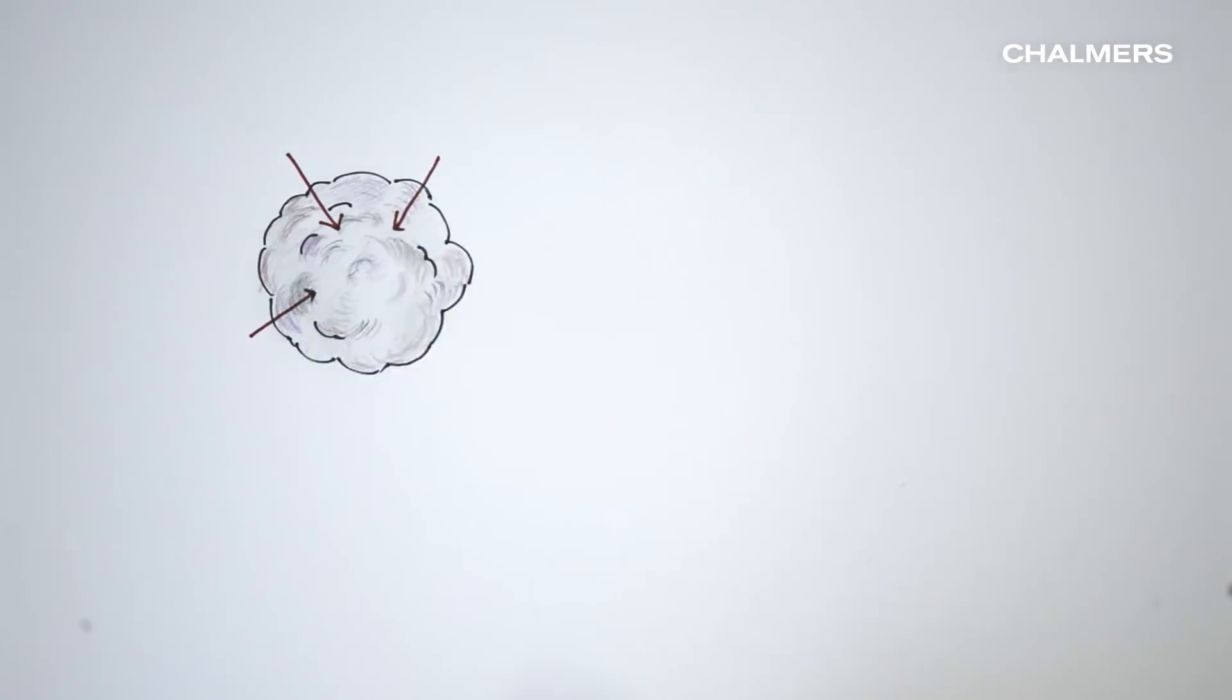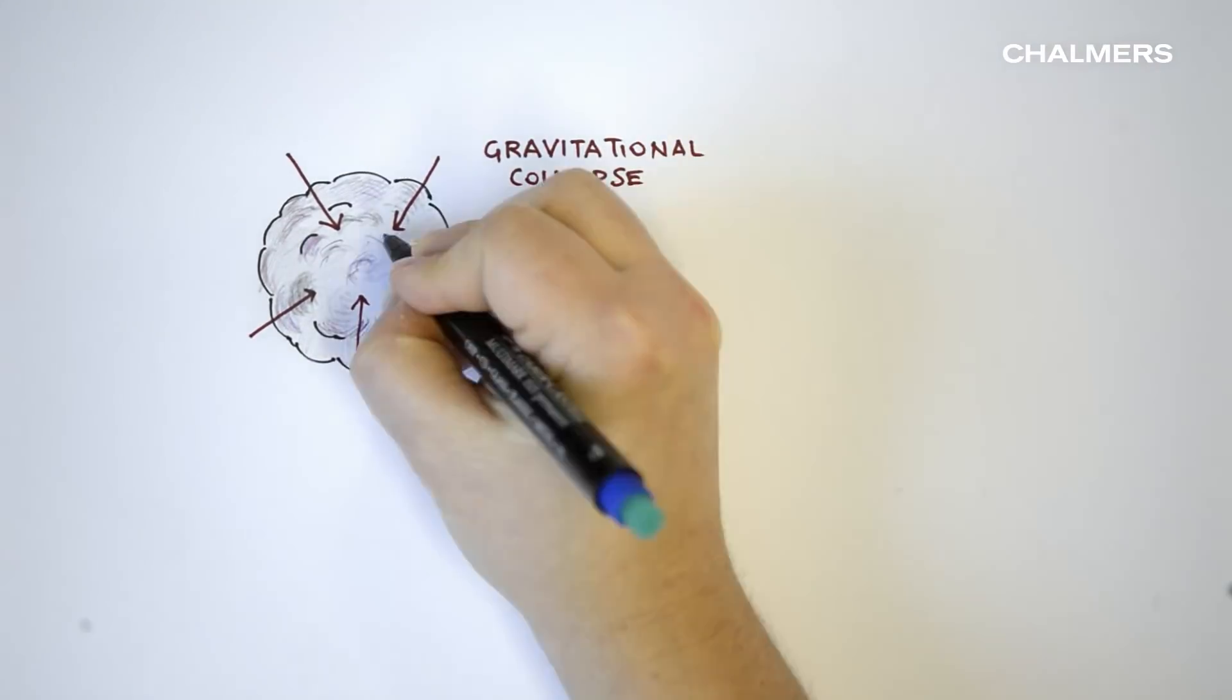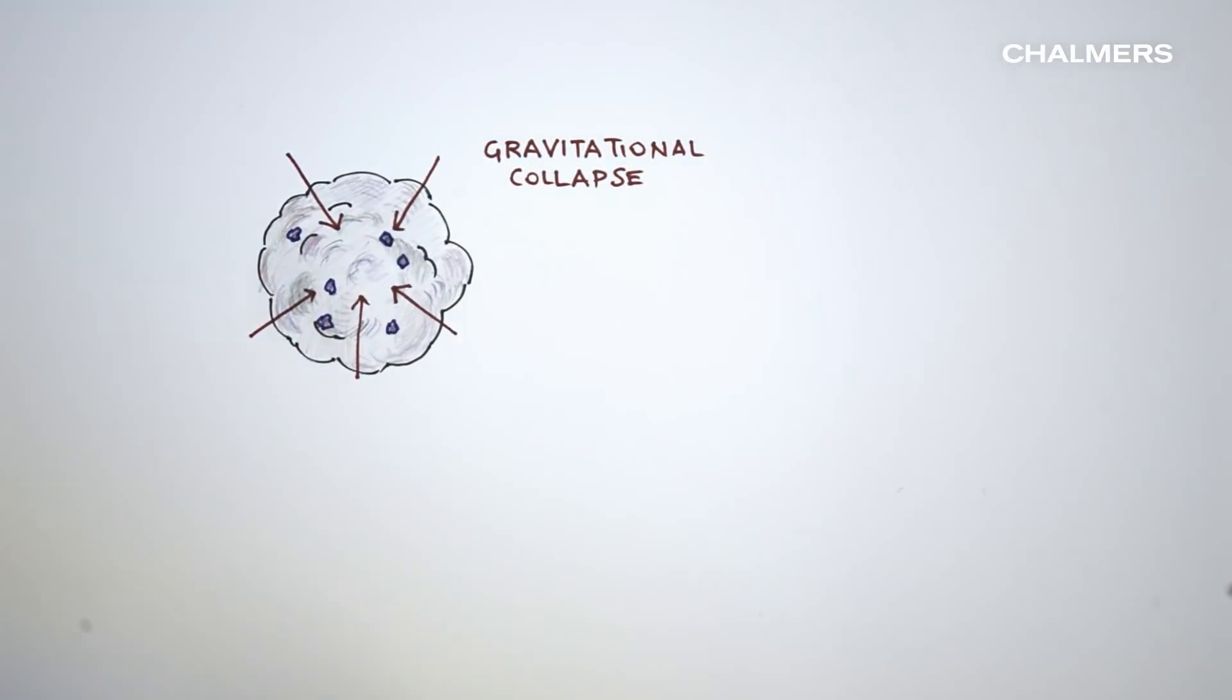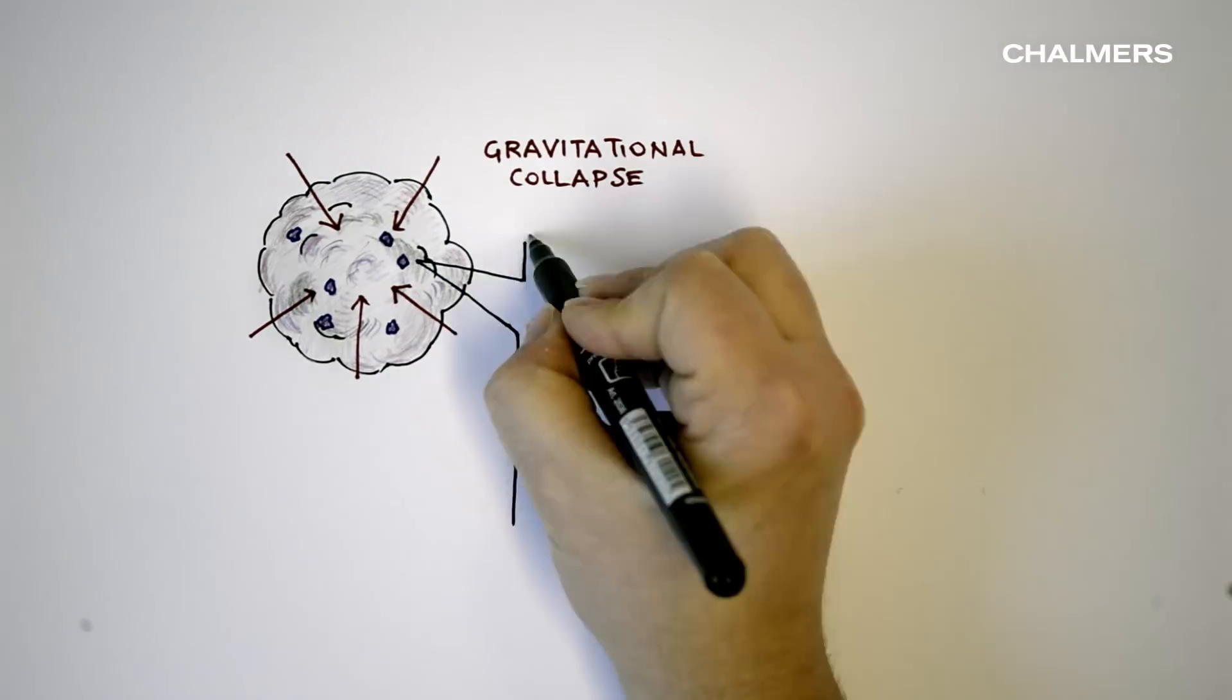At one point, when this cloud gets disturbed, it collapses under its own gravity and breaks up into many smaller, denser pieces called cores.